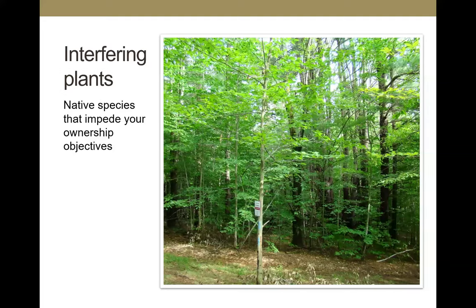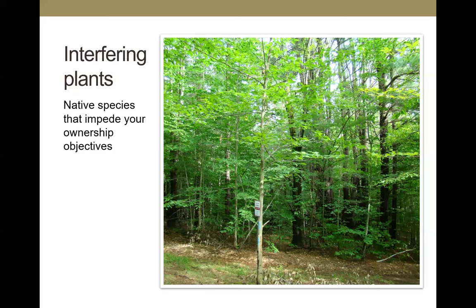You're going to have interfering plants — native species that impede your ownership objectives. There's a picture of a beech understory, and species like striped maple and hop hornbeam are native but can dominate, impeding access and visibility. That doesn't mean they don't also have some benefits: beech is one of my preferred smoker woods. Easy to handle these small stems — you just cut them into the correct lengths, dry them a little bit, and they're ready to go into the smoker.